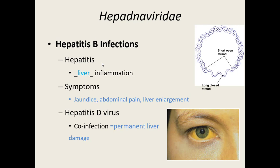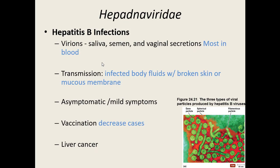Hepatitis B virions congregate and collect in saliva, semen, vaginal secretions, and in large numbers in blood, making it a big concern when dealing with bloodborne pathogens. It's transmitted when infected bodily fluids contact any broken skin or mucous membranes, and it takes very little virus to get into the body and cause disease.